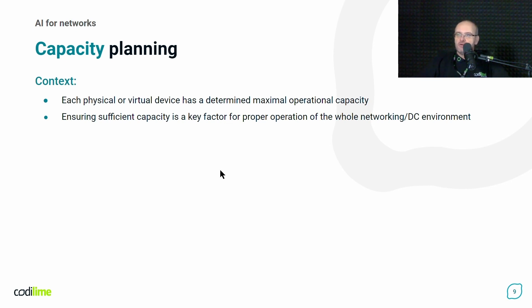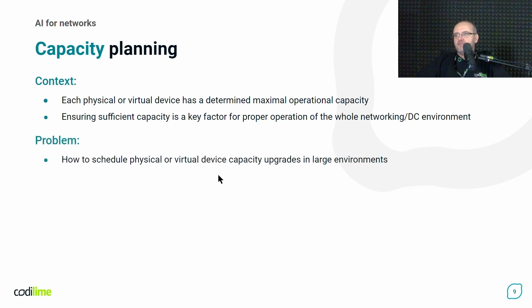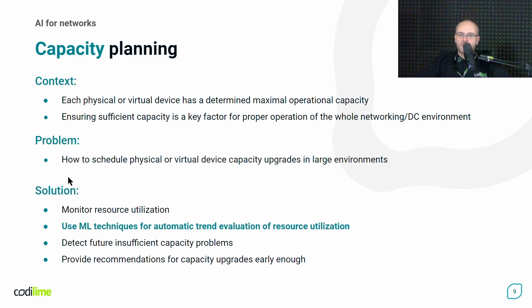We know that each physical or virtual device has a determined maximum operational capacity, and providing a sufficient level of capacity is a key factor for proper operation of our networking or data center environment. The problem is that if our environment is huge and consists of a lot of devices, how do we schedule the upgrades to higher capacity? Here we could use various machine learning techniques working on resource utilization monitoring data. Such machine learning techniques can be used to automate the process of trend evaluation and to detect future insufficient capacity problems.